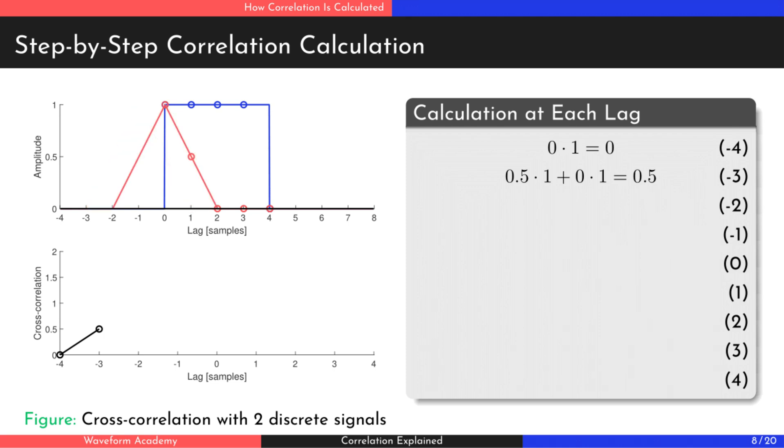Next, we shift the triangle one more sample to the right. Now, we multiply all corresponding samples between the rectangle and triangle, then sum the results to obtain the cross-correlation value for a lag of minus two.